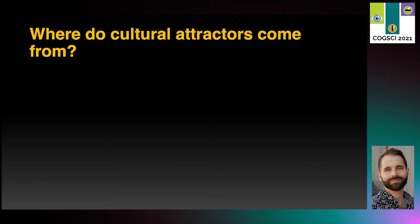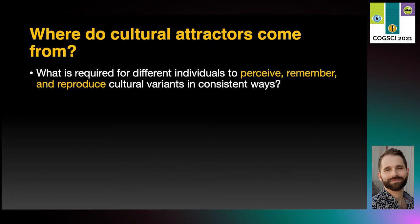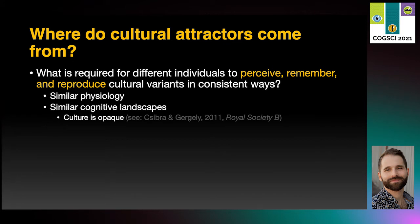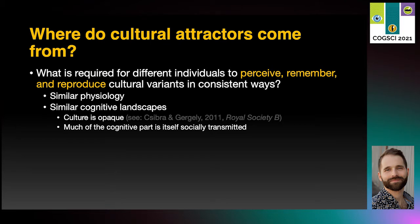Another way of asking this question is: what's required for different individuals to perceive, remember, and reproduce cultural variants in consistent ways? First, they have to have similar physiology. For example, humans can't possibly transmit speech to primates, since primates lack the necessary vocal apparatus, but we can transmit minimal sign language. Just as importantly, individuals need to have similar cognitive landscapes. Consider that culture is opaque, meaning it's not necessarily clear which features of an artifact or behavior are meaningful and should be copied. The cognitive capacities for recognizing and imitating relevant aspects of a signal may in large part themselves be socially learned.